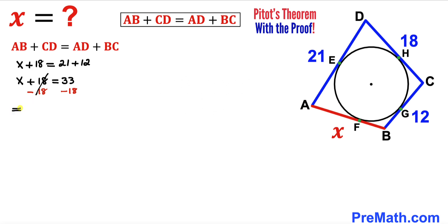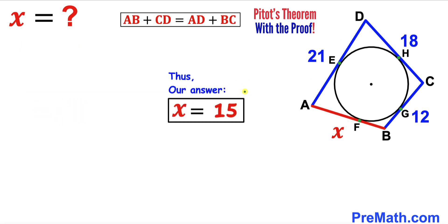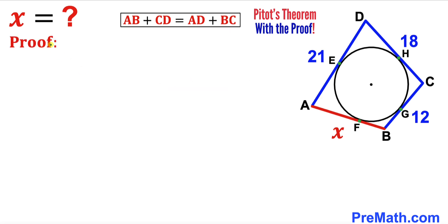Therefore our X value turns out to be 15 units — in other words, the side length AB is 15. Now in the next step I'll show you the proof of Pitot's theorem.